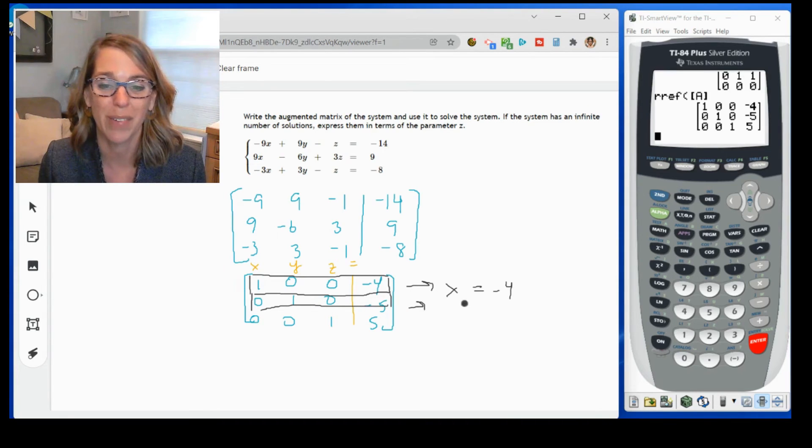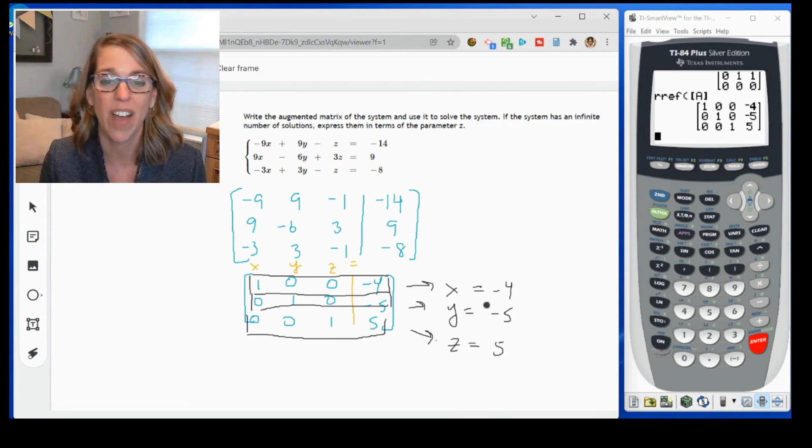Okay. I just wrote over that one, but we can still read it. This tells me that 1y is equal to negative 5. And then that last one is telling me that 1z is equal to 5. So that ordered triple is the solution to the system of equations.